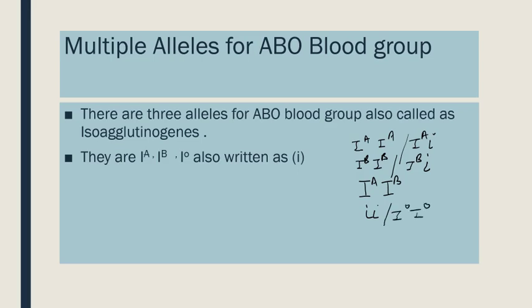For one character — blood group — one phenotype, there are so many different combinations of alleles found on chromosomes in a population. When we say multiple alleles, we are talking about a population. Every individual in the population has a different type of allele for their blood group. You can see this in your family also — every person in our family has a different blood group, meaning different allelic pairs or isoagglutinogenes.